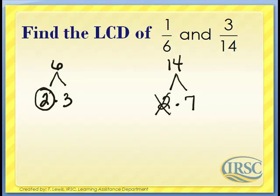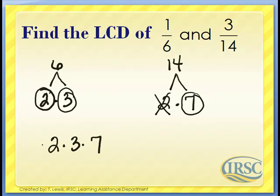We don't need to worry about duplicates since 2 appears just once. The factor 3 appears once, so we circle that. The factor 7 also appears once. So we multiply the circled factors: 2, 3, and 7. 2 times 3 is 6, and 6 times 7 is 42. So the LCD is 42.